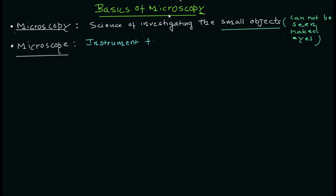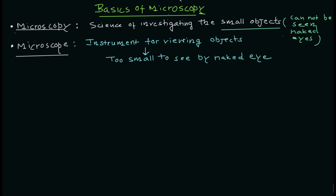Microscopes are basically instruments for viewing small objects — objects which are too small to be seen by the naked eye. Here we are talking about micrometer-scale objects. Even if we try to see those objects, our eyes are not going to resolve them.